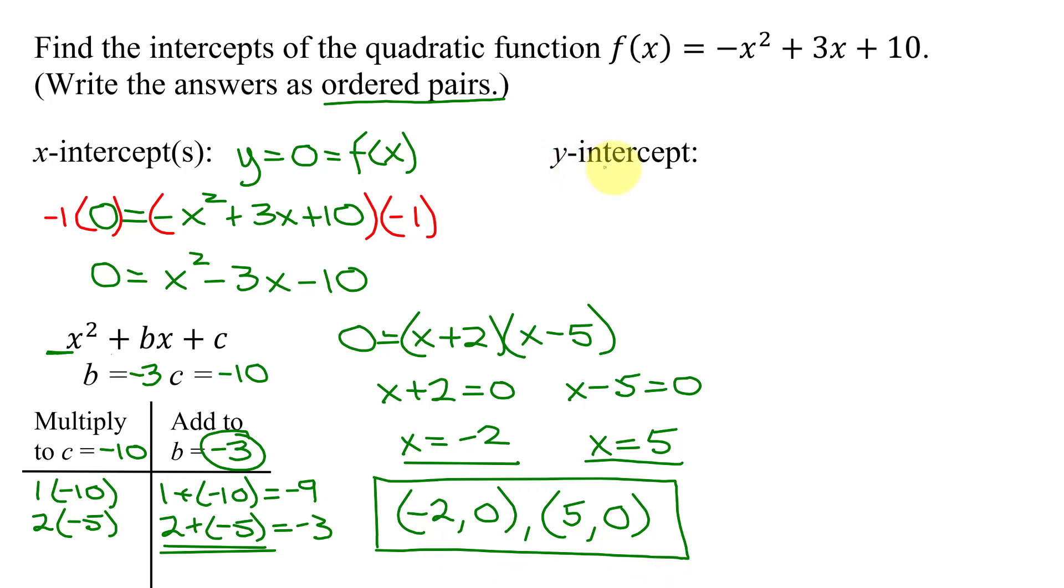Now I need to find the y-intercept. And how do you do that for any function? You do it by setting x equal to 0. So I need to put 0 here, here, and here. So f(0) equals negative 0 squared plus 3 times 0 plus 10. So f(0) is negative 0 squared is just 0. 3 times 0 is 0 plus 10. So 0 plus 0 plus 10 is just 10. So what are the coordinates of the y-intercept? Remember, x equals 0. And the f(0) is the y-value. So what is the y-value? It is 10. So the y-intercept is the point 0, 10.